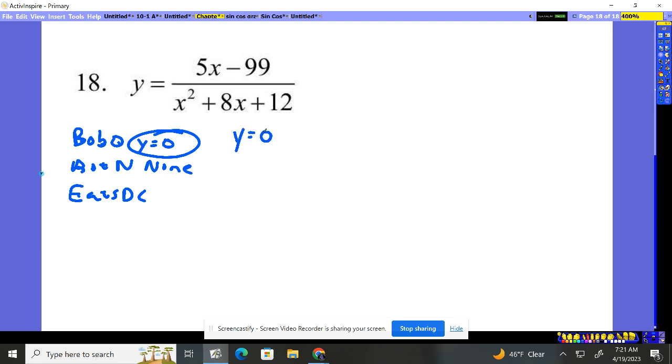For vertical, we simply take the denominator and set it equal to zero because we're looking for what x's can't be and we're drawing lines at those spots. So if I set this equal to zero, the first thing I notice is it's a trinomial. You're going to have to factor it.